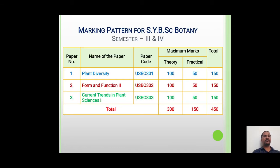The marking pattern for SYBSC Botany Semester 3 as well as Semester 4: from Paper 1, Plant Diversity (USBO301), the theory paper will be of 100 marks, while the practical paper will carry 50 marks. Similarly, Paper 2, Form and Functions 2 (USBO302), has a theory paper of 100 marks and practical paper of 50 marks, totaling 150 marks.